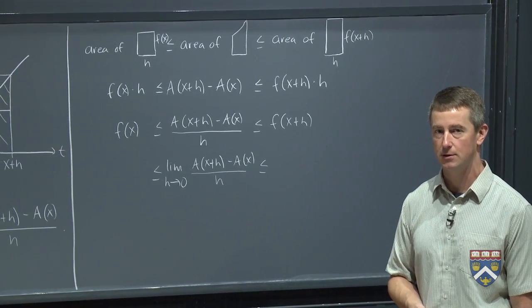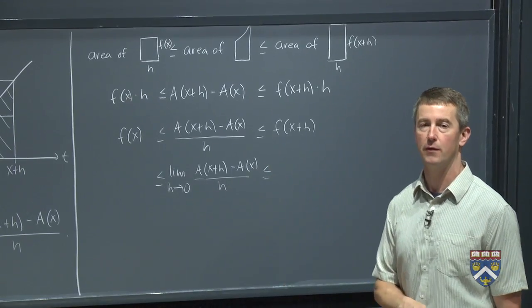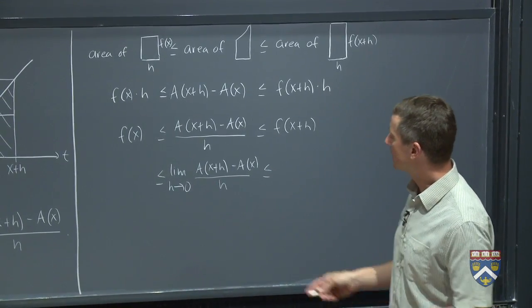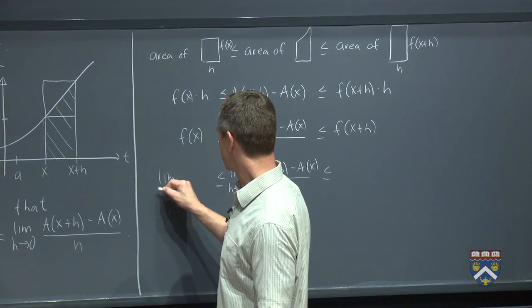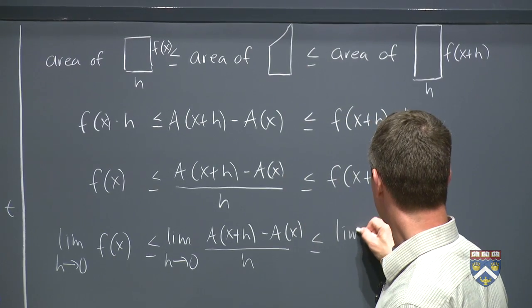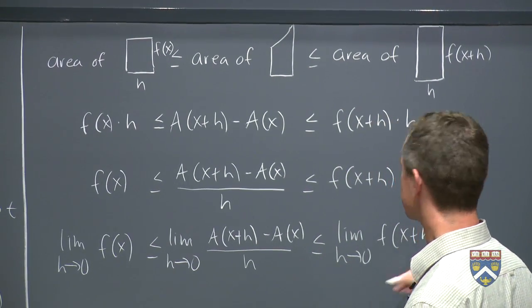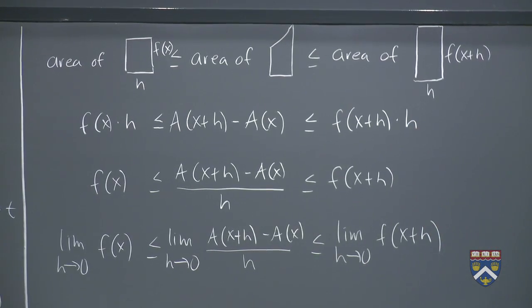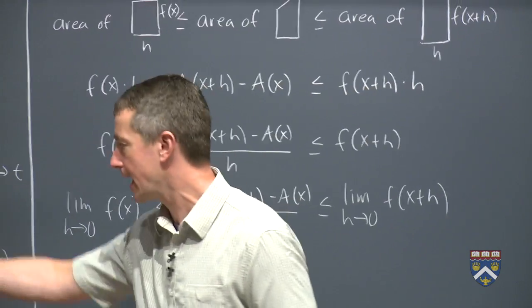So what this should remind you of is when we did the derivative of sine of x, we needed to compute the limit as h went to 0, sine h over h, we did exactly something like this. And we called it the squeeze theorem. If I take the limit of the middle term, I got to take the limit of the other two as well. So limit as h goes to 0, f of x, and limit as h goes to 0 of this one. So this is good. We're almost there. This thing in the middle is exactly what we want. It is a prime of x.